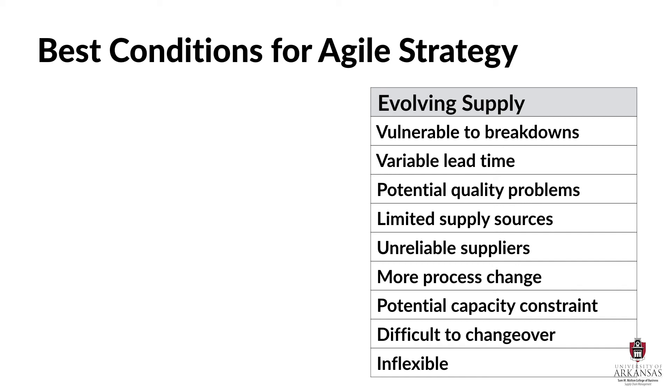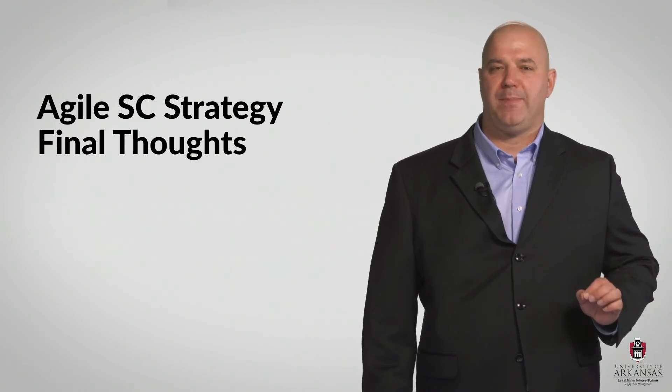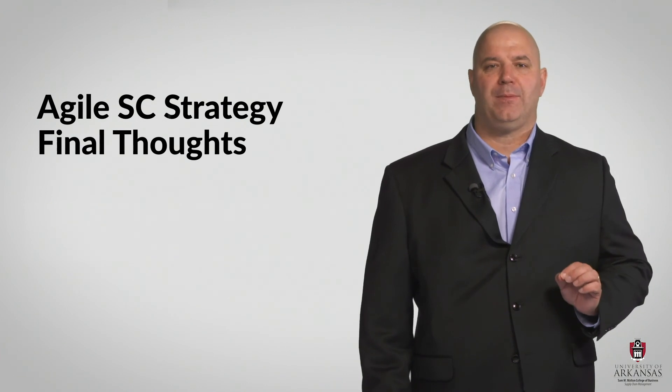These sources of supply often have quality problems, reliability issues, extended processing times, capacity issues, and difficulty with change or flexibility. Agile strategy is needed when supply and demand uncertainty are both very high. This is the toughest operating environment I know of. It is not fun to manage here. And to make it worse, an agile strategy is not clear cut or well defined.